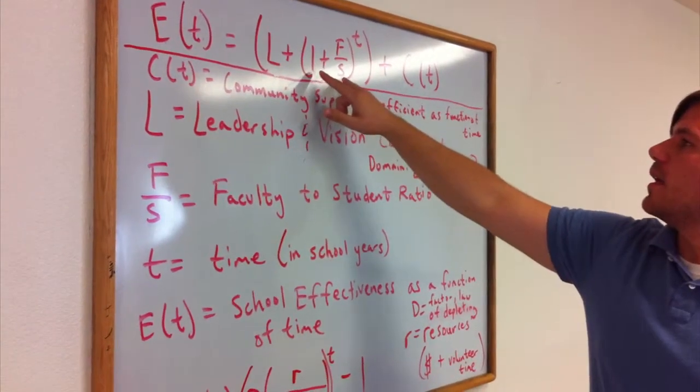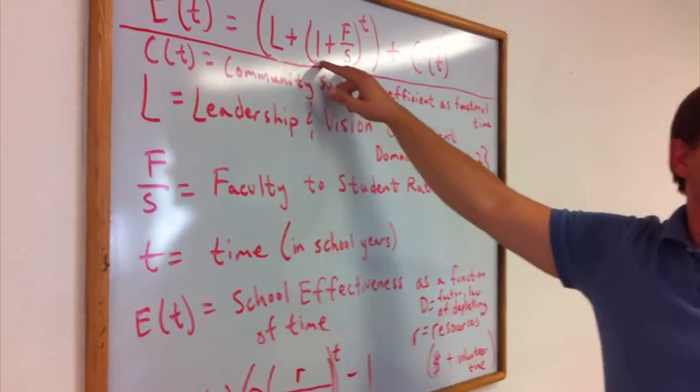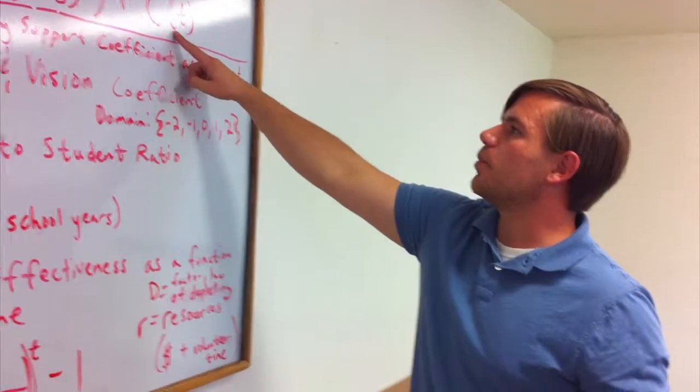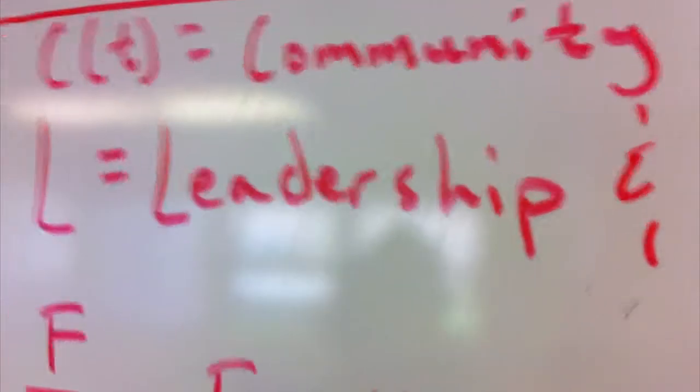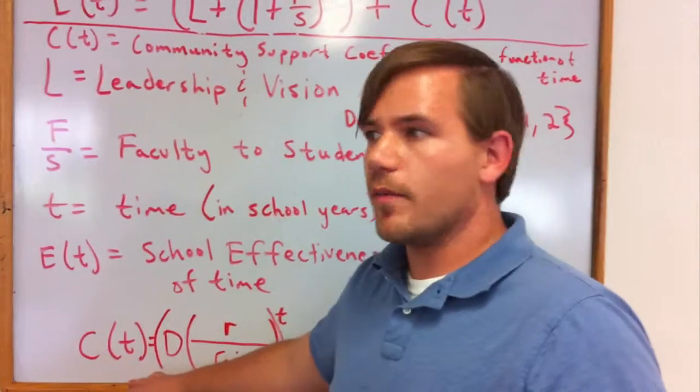This here is a growth factor for student success and achievement based on the faculty to student ratio. Over here we have community support coefficient as a function of time. In addition to what the school does for student achievement, the community plays a role and can either hinder or assist in promoting student achievement and real success.